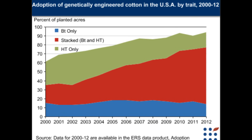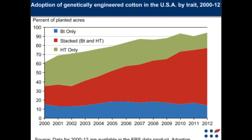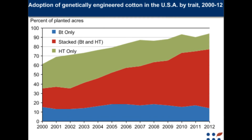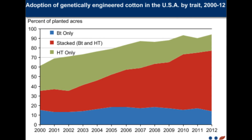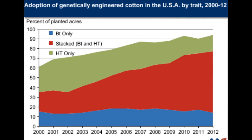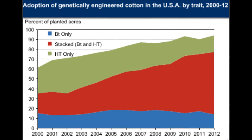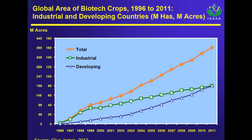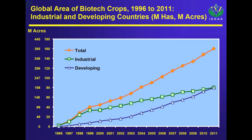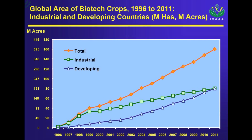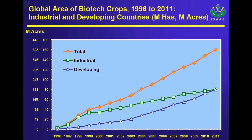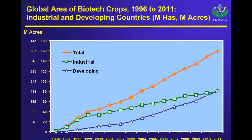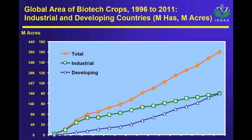Adoption of GM cotton. This is a picture of GM cotton in the USA from 2002 to 2012. GM crops raise farm incomes. Global cotton adoption reached 80%, an increase compared with 64% planted to Bt cotton in 2010.